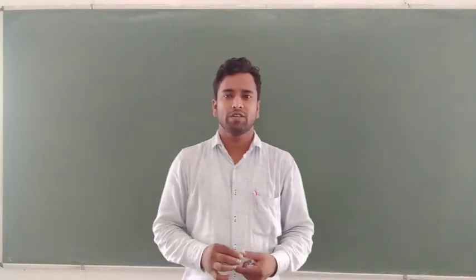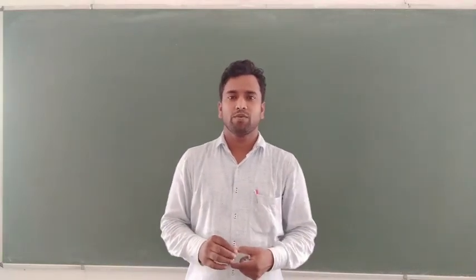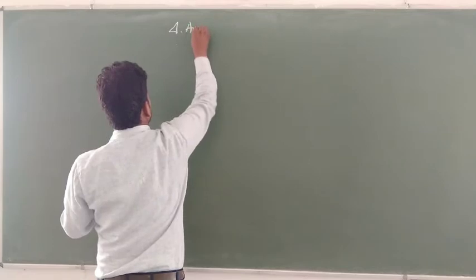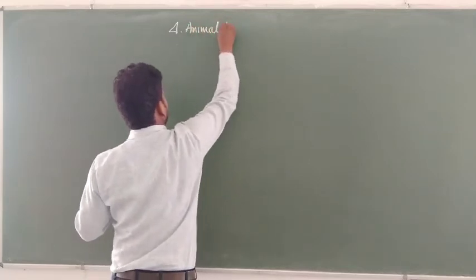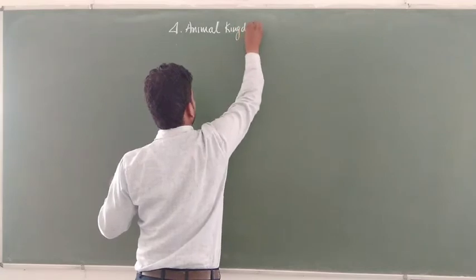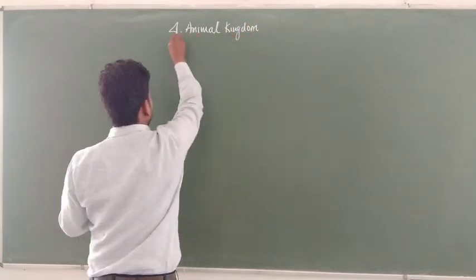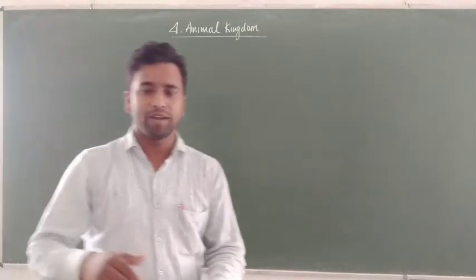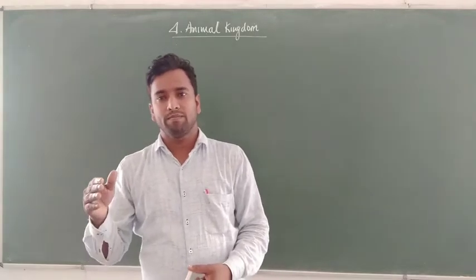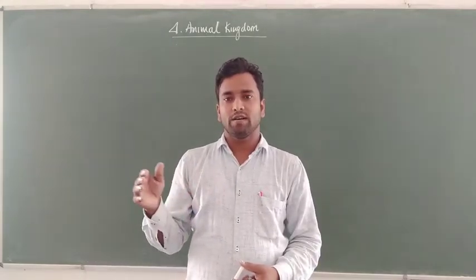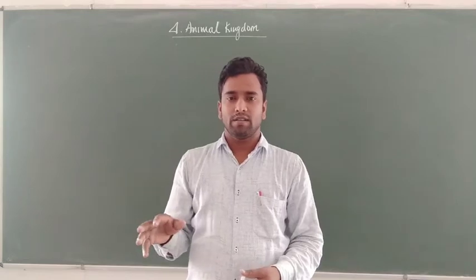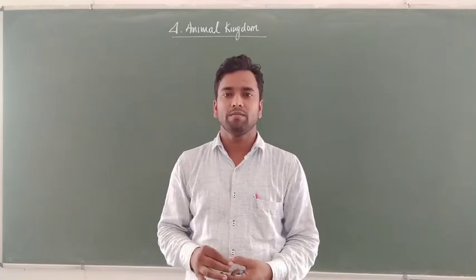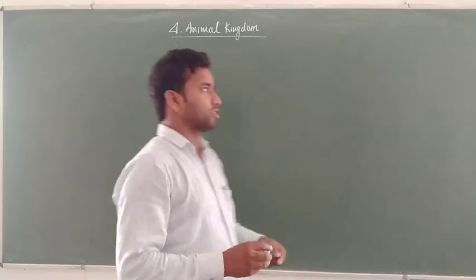Hello dear students. Today I am going to teach Chapter 4 of Class 11th - Animal Kingdom. According to the 5-kingdom system, Animalia is the 5th kingdom of R.H. Whittaker's classification. The other four kingdoms are Monera, Fungi, Protista, and Plantae. Animal is the most advanced kingdom of the 5-kingdom system. What are the characteristics of animals?